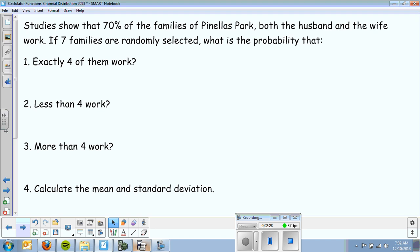I want to know what's the probability that exactly 4 of them work. That's basically the probability that X equals 4 out of 7. We need to know our parameters for binomial distribution. N, in this case, is 7. That's my total number of families. And P, the probability of success, is 0.7.